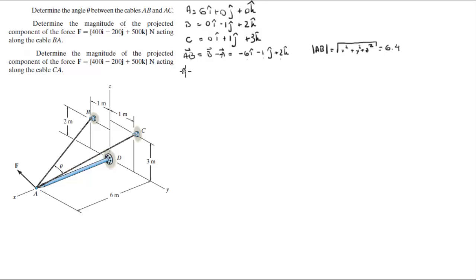Now let's find AC vector which is C minus A, which comes out to be negative 6I plus 1J plus 3K. And the magnitude of the AC vector which is found in the same manner as we did the one above comes out to be 6.8.